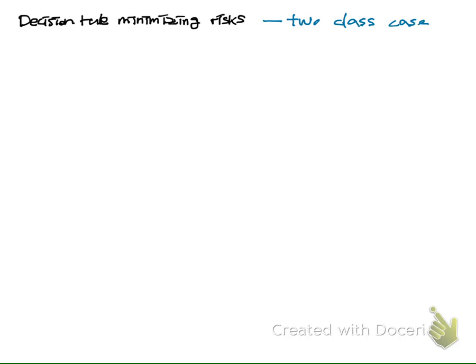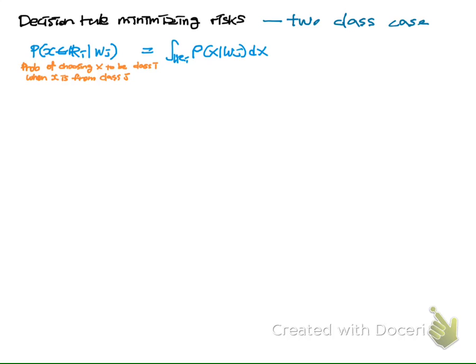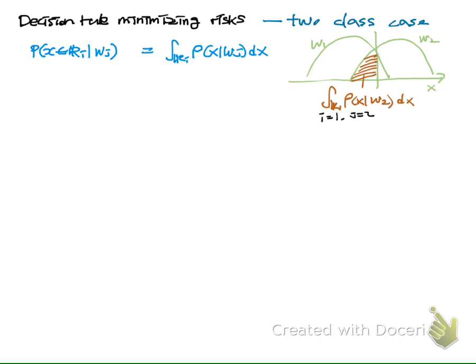Let us find how we can determine the decision rule minimizing the risk for the two-class case. The probability of choosing X to be class i when X is originally from class j can be computed by integrating the PDF of X observed in class j over the decision region i. For example, when two class probability density functions are shown over X, the probability of classifying X into class i when the true class is class 2 is the shaded area.